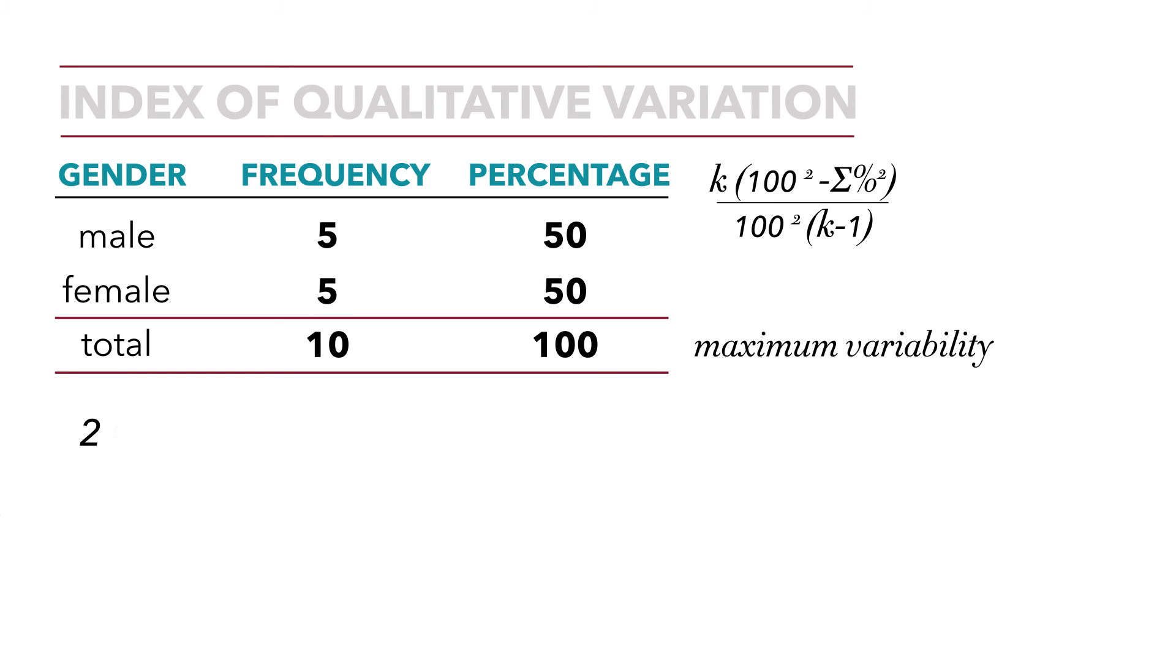Again, our k is 2. 100 squared is 10,000 minus each percentage squared. So for males, the percentage is 50 squared plus the percentage of females is 50 squared over 10,000 times k minus 1. k is 2, so 2 minus 1 is 1.